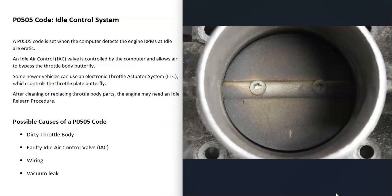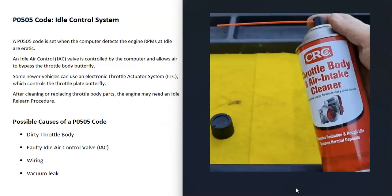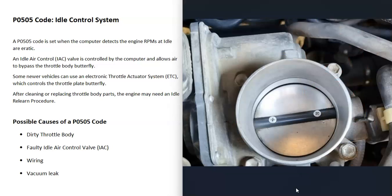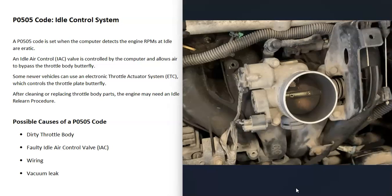The first thing to do is examine the throttle body. Make sure it doesn't look extremely dirty or have a lot of buildup, because a dirty throttle body can throw everything off. If it does look dirty, get some throttle body cleaner from an auto parts store and use a small toothbrush to clean out the buildup. When you first start the engine after cleaning, it may run a little rich for a minute or two, but that's normal.